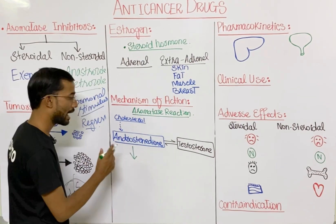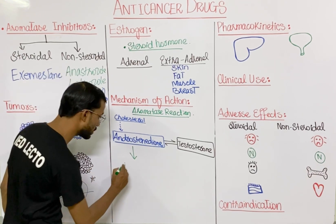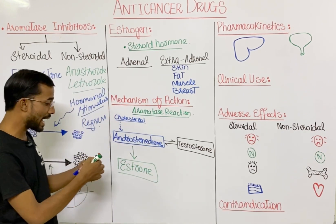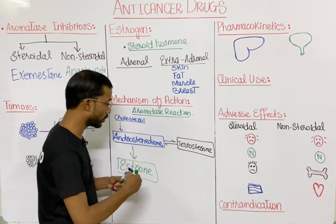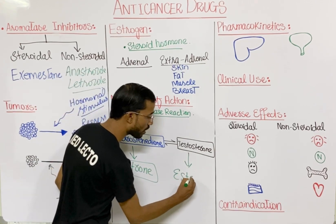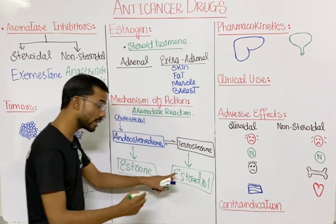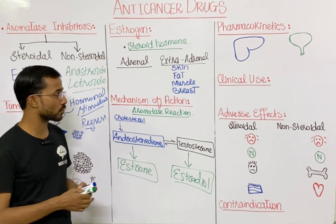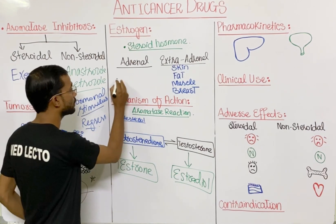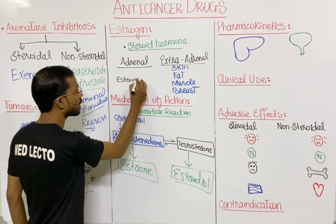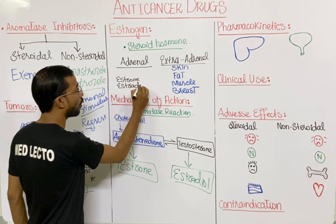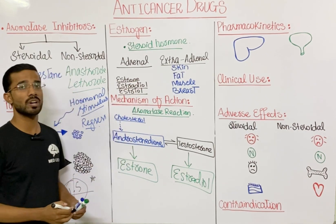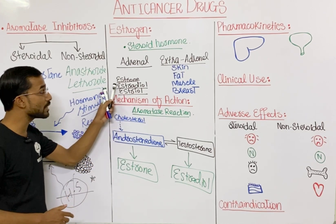Androstenedione actually produces estrone, which is an estrogen hormone, and testosterone actually produces estradiol, which is again an estrogen. There are three forms of estrogen: estrone, estradiol, and estriol. These different forms can also be interconvertible.